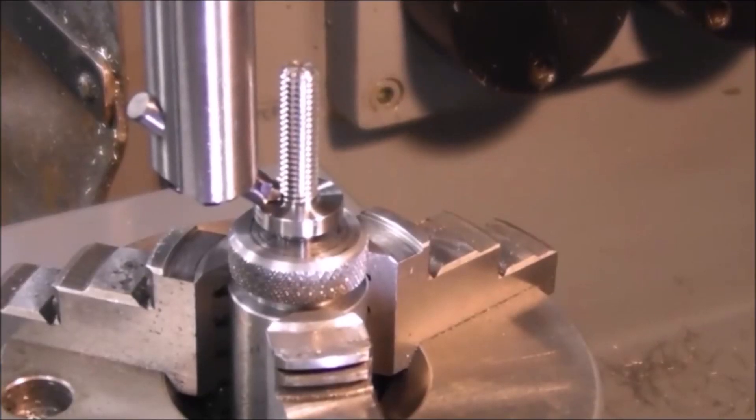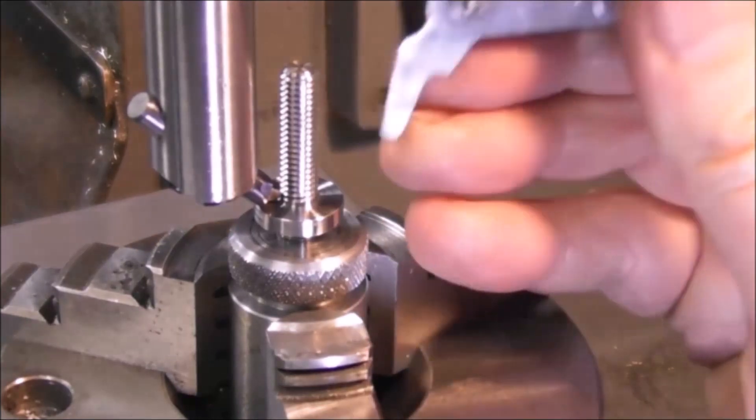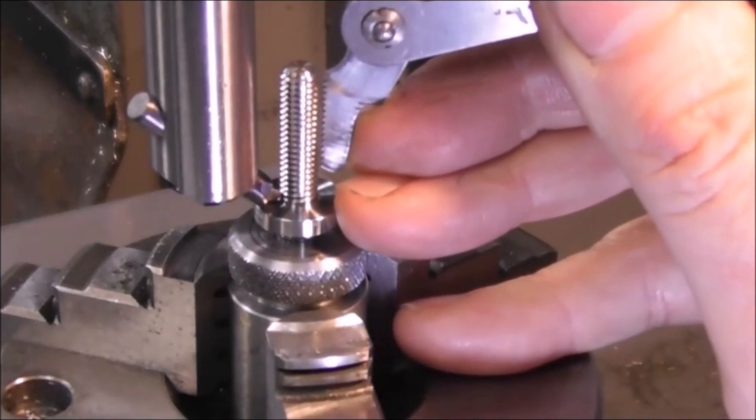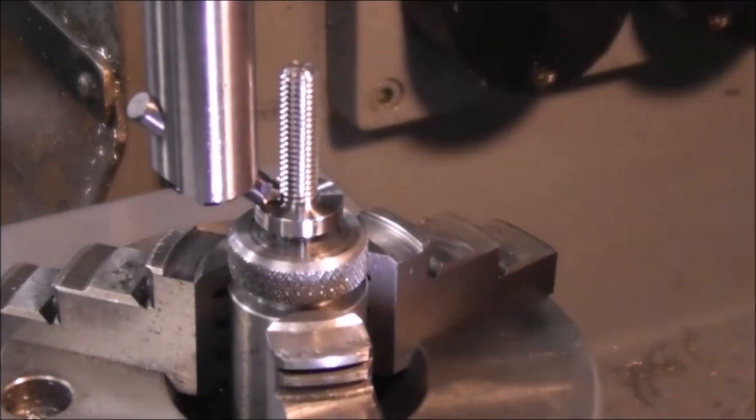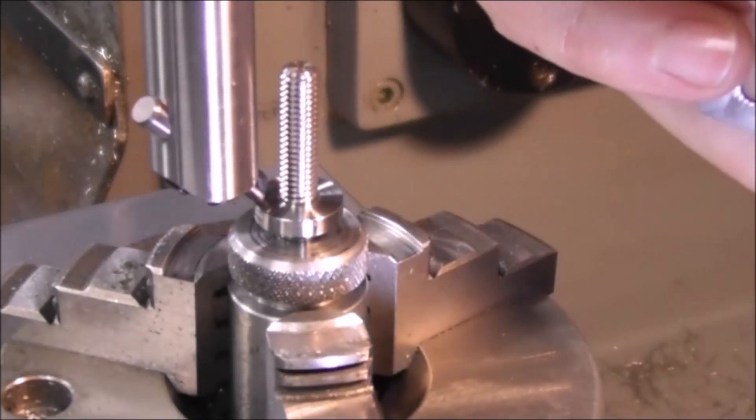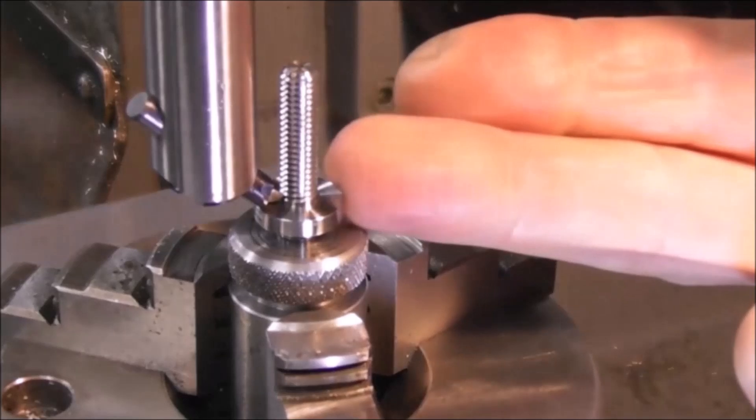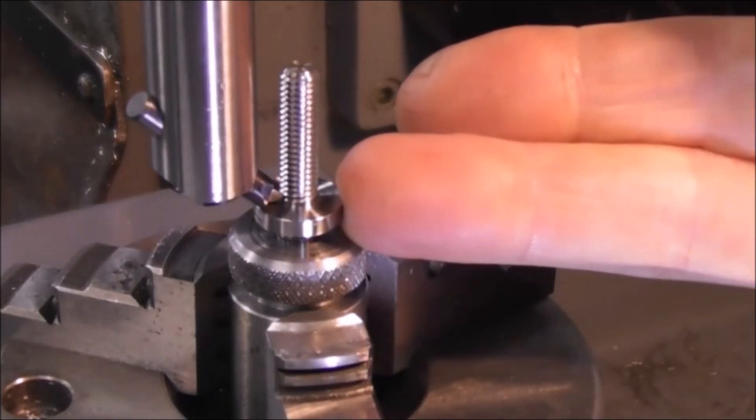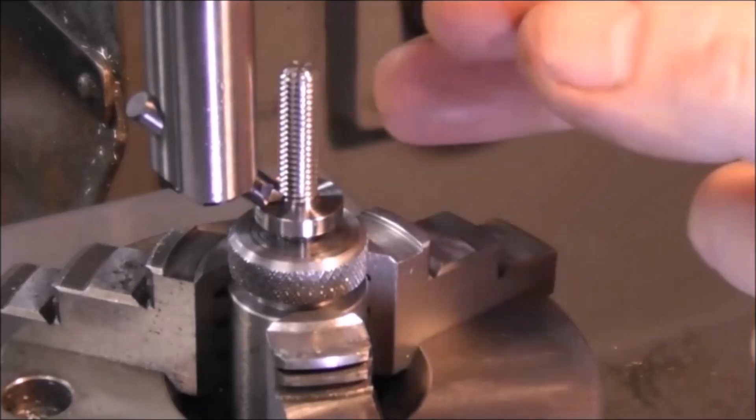This particular job illustrates the advantages of thread milling for this type of application where you need a very accurate pitch over a long length, where you need to get right down to the shoulder so the cutter can swing around really close there, and you don't want to have an undercut for screw cutting because that will weaken it and reduce the length of the thread.